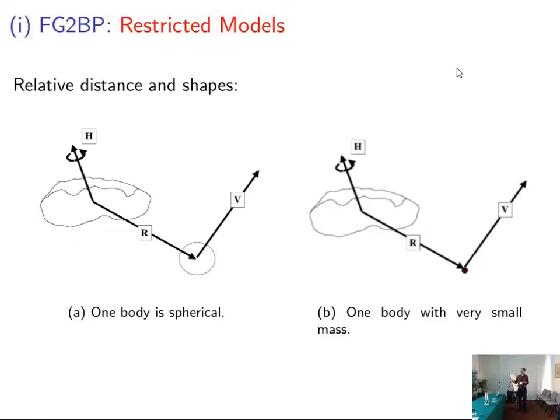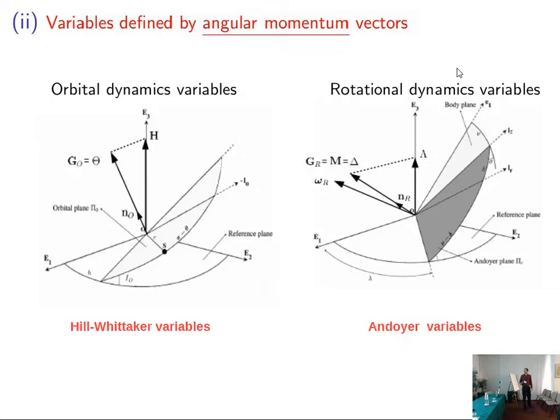This is the restricted model where we consider, for example, the central body as spherical. It works fine if the body is too far to feel the gravitational effects due to the irregular shape of the central body. It works fine also for, for example, Earth and asteroid or Earth and spacecraft.